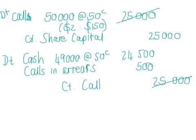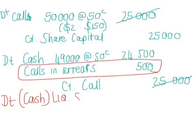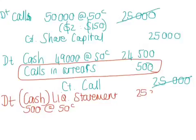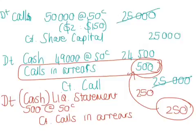During the liquidation process, we were told that of those 1,000 shares, only half can be realised. So during the liquidation process, we'll see a debit entry to cash — recorded in the liquidator's statement of payments and receipts — for only half of the calls in arrears: 500 shares at 50 cents, giving $250. We credit calls in arrears $250. At this stage, we still sit with a balance of $250 in the calls in arrears account.